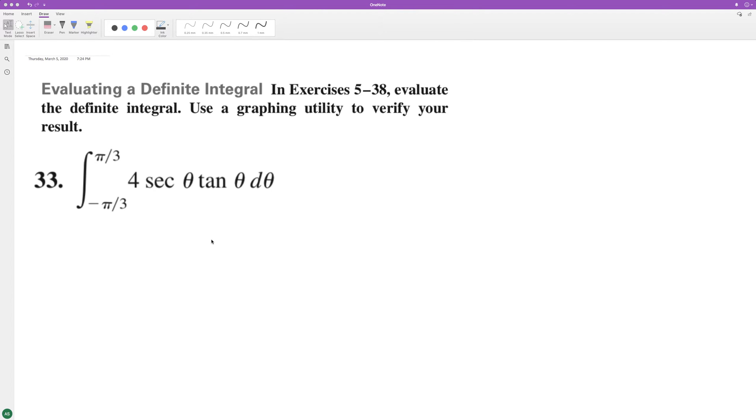So we can put the four out in front, so we have secant theta tangent theta. The integral of that is just secant theta, so we have four times the secant of theta, integrate well from negative pi over three to pi over three.